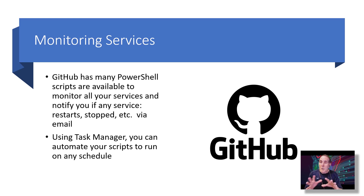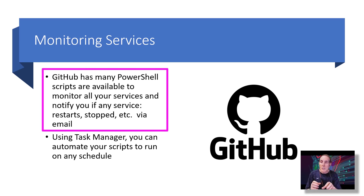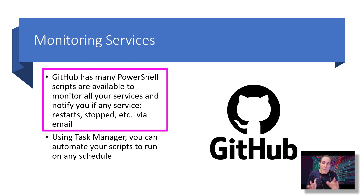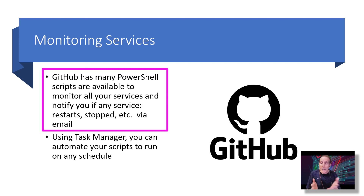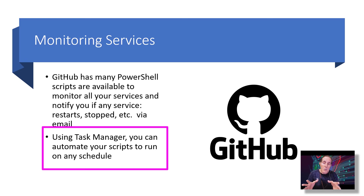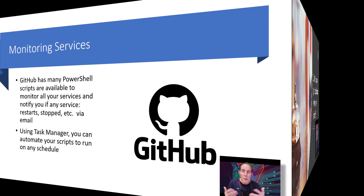If you want to monitor your services, especially on a server, GitHub has many PowerShell scripts available for free that help you monitor your services and notify you if a service restarts or stops, and it can even send you email. You can also use Task Manager to automate how often these scripts run on any schedule.